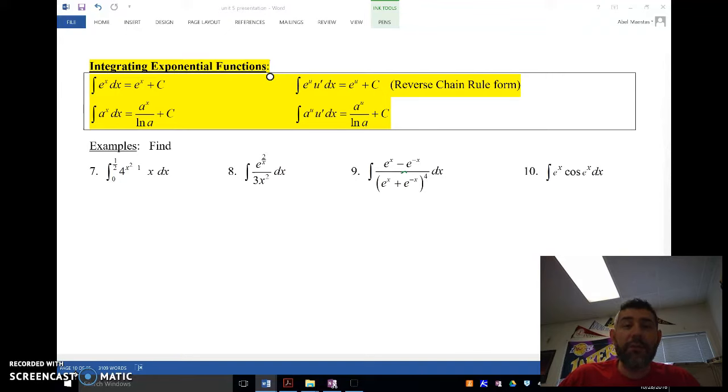So up here, I've got the rules for integrating exponential functions. And just like the derivative of e to the x is e to the x, the antiderivative of e to the x is e to the x. When we're doing a reverse chain rule, we've got to look to see if there's something multiplied by that e to the x. It should be whatever that derivative of that power is. If we're dealing with an exponential that's not an e, so something with a different base, then we're going to need to divide by ln A. Just like we multiplied by ln A with the derivative, we have to divide by ln A when we take the antiderivative.